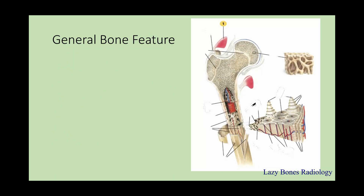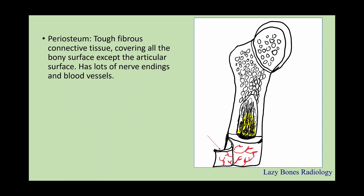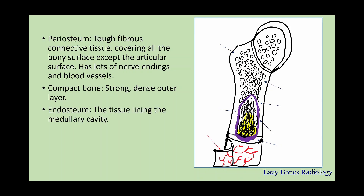General bone features. Bones are made of multiple layers, so it's important to have a basis of how the skeletal framework is constructed. There are eight sections I will cover in detail. The periosteum is a tough, fibrous connective tissue that covers the bony surface except the articulating surface, and is filled with nerve endings and blood vessels. Compact bone is a strong, dense outer layer, while the endosteum is a thin tissue lining that outlines the medullary cavity.